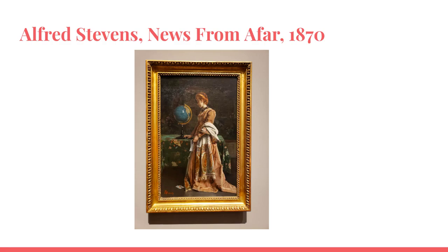In conclusion, News from Afar by Alfred Stevens is a culturally significant painting, showing the importance of communication and domesticity in Victorian society. Stevens' use of composition, color, and light conveys the painting's message and creates a personal and inviting scene. The painting serves as a representation of the Victorian era's emphasis on domesticity and women's roles in the household.